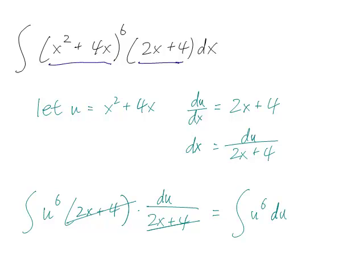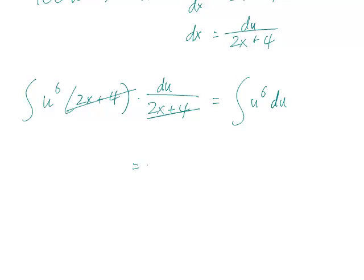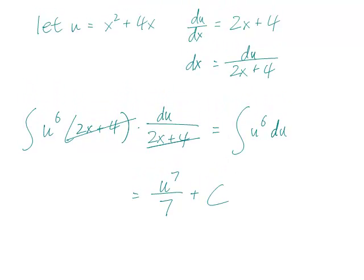Using the power rule, that would be u to the 7th over 7 plus C. And remember that u is x squared plus 4x. So this is x squared plus 4x to the 7th over 7 plus C.